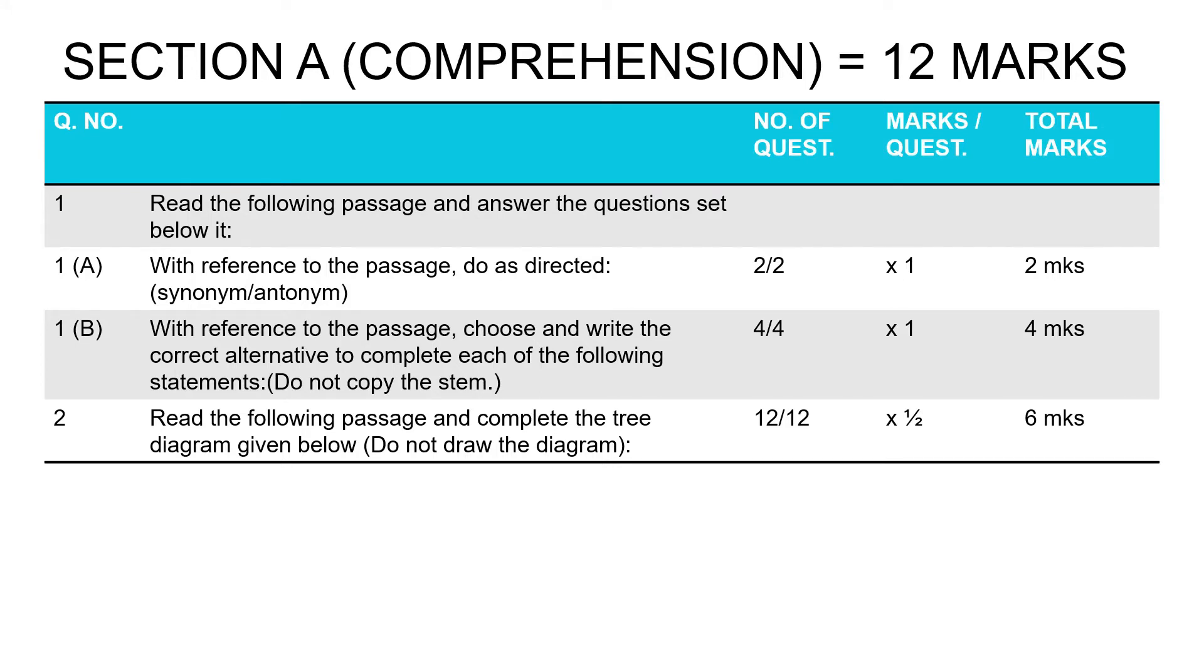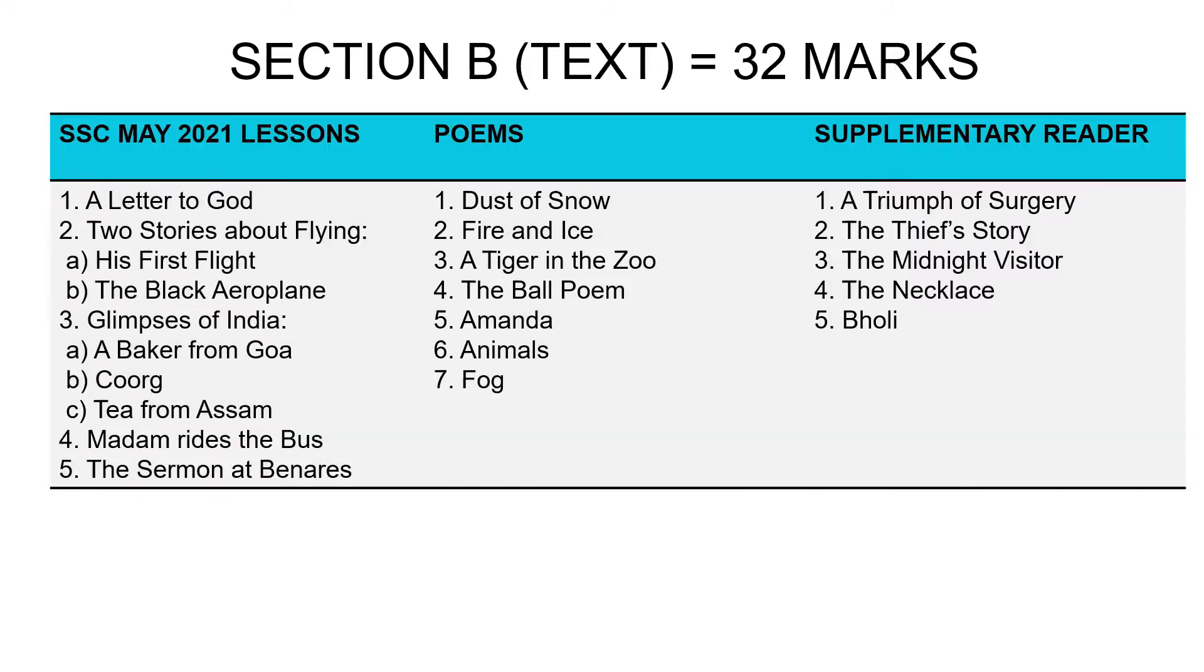The second type of comprehension is a little different. It is your tree diagram or flowchart. You're given a passage and below it you're given the flowchart or tree diagram with a few blanks—12 blanks in total—which you need to complete. There is no need to redraw the diagram in your answer sheet. You just need to write the serial number and write the correct answer against that. 12 blanks, half mark each, six. Six plus six gives you a total of 12 in comprehension.